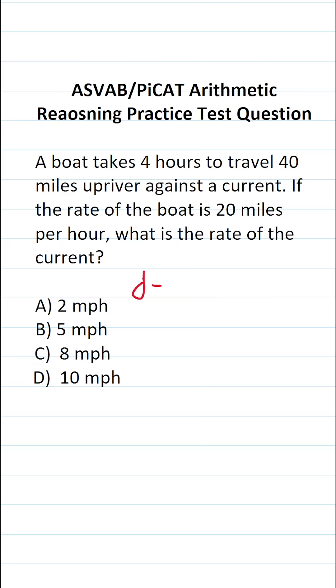So as you read through this problem, you probably noticed that you have everything you need to use the distance formula to solve it. More specifically, we know that it takes the boat a time of four hours to travel a distance of 40 miles upriver against a current. And what's more, we know the rate of the boat is 20 miles per hour.